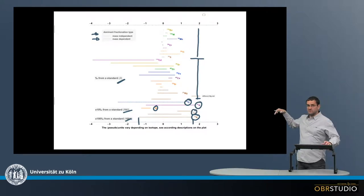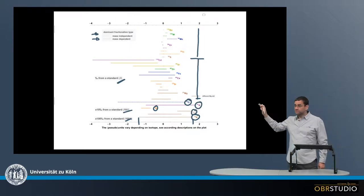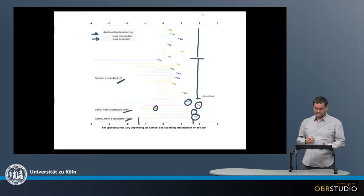Now the first thing we can observe here is that the mass dependent variations are generally much larger than those that are the variations that are mass independent. And we can observe these kind of fractionations here in magnesium, silicon, calcium, iron, zinc, strontium.